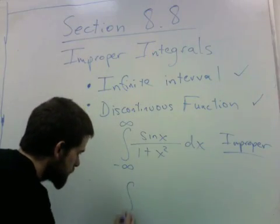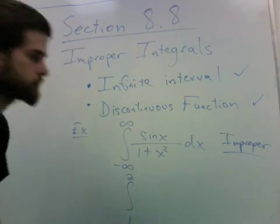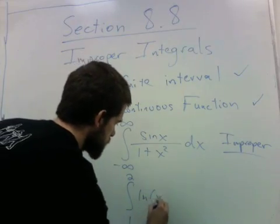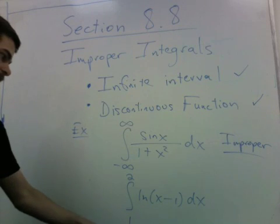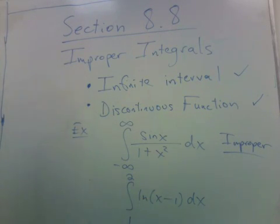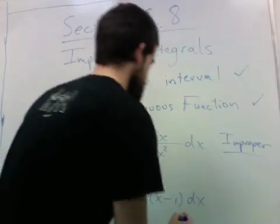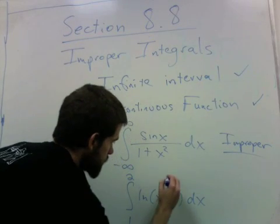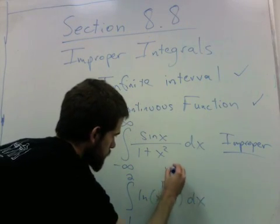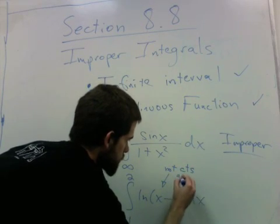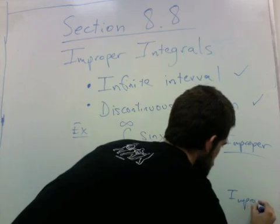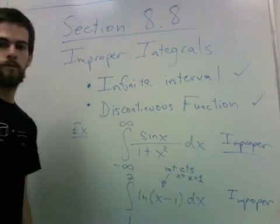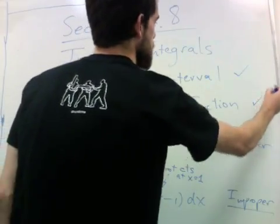One more example. Something like this. Natural log is not continuous at 0, so natural log of x minus 1 is not continuous when x equals 1, so this is also improper and it falls under this category.